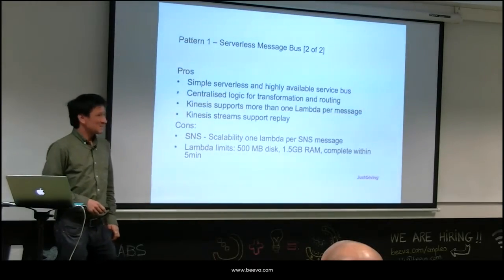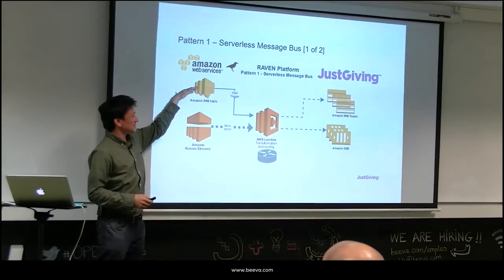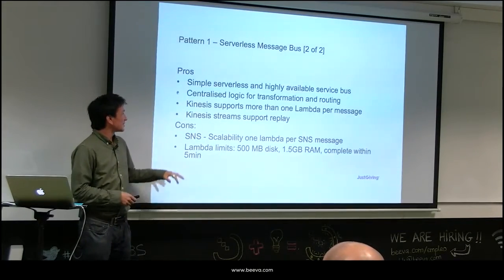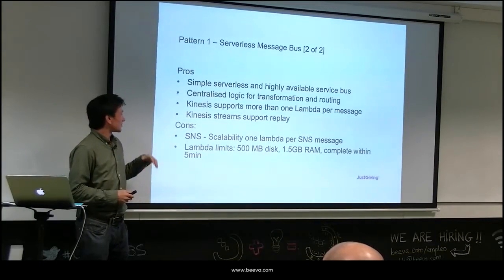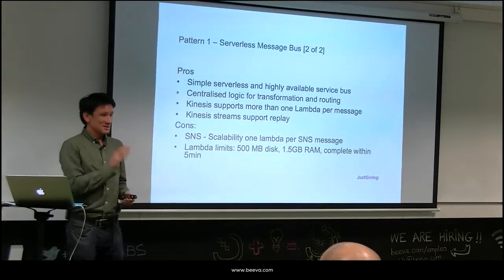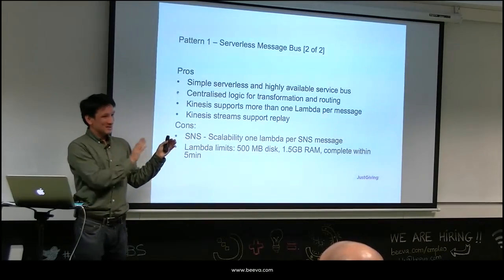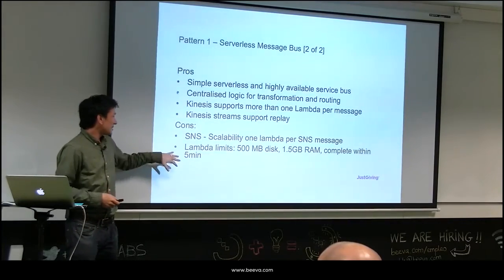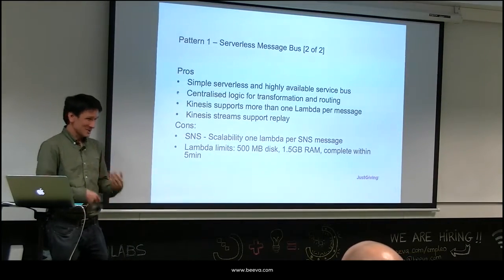Pros: it's quite easy to do, very simple to implement, and highly available. You centralize some of the business logic — the producer of the message doesn't need to worry about where it's going to end up or the type of transformation. With Kinesis you can support more than one message per Lambda invocation; with SNS there's a one-to-one relationship so it won't be as scalable. Kinesis Streams also has an interesting replay feature — if you've got seven days of data, you can replay from the beginning (what they call Event Horizon), choose a specific date range, or just get new records. There are limits to be aware of: the Lambda has 500 megabytes on disk, 1.5 GB of RAM, and must complete within five minutes.